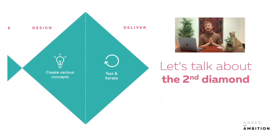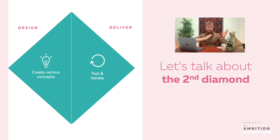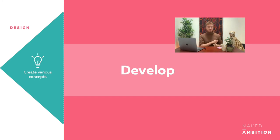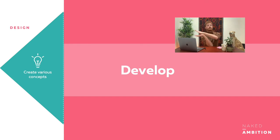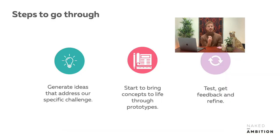The second diamond is all about develop and deliver — two steps within the second diamond. Let's take a closer look at develop. Within develop, we do three things: we generate ideas, we bring concepts to life through storyboarding, and we get feedback and test it. Looking at develop in the shape of the diamond, it opens up — it's divergent thinking again. We have the how might we question, and then we look at all the possibilities, all the solutions we can think of that will answer it. When we have all those ideas, we prototype them to get feedback from users or customers, then start iterating.